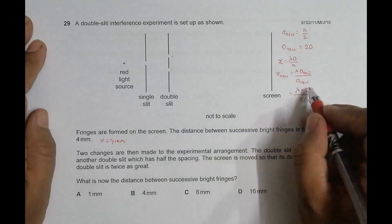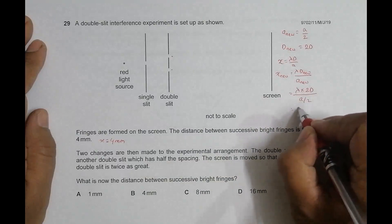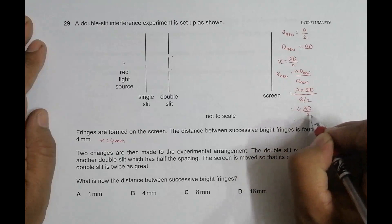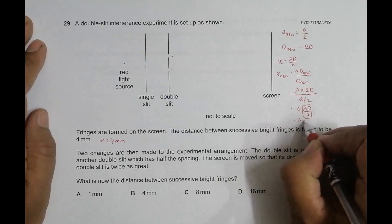Which means this 2 goes here, so we will have 4 lambda D by a. And lambda D by a is equal to the initial x here, so it is 4x equal to 4 into 4.